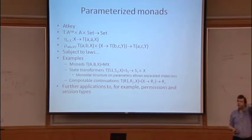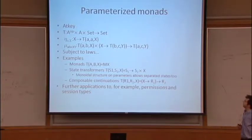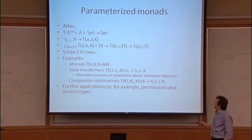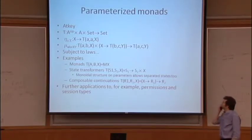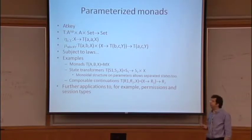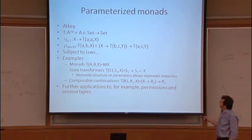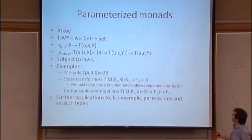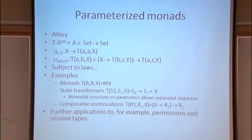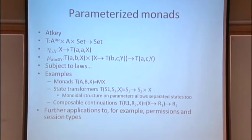Another nice generalization of monads is due to Bob Atkey: parameterized monads. It's a fairly natural-looking generalization that turns out to be very neat. Instead of just asking for T from set to set to be a monad, we feed into the definition of the monad both a covariant and a contravariant parameter. The generalization has an eta and a bind operation: for any x, you can go to a T of AA x for any A. You can see the pattern in the composition — we have a computation from A's to B's, a continuation from B's to C's, and the overall computation produces a y but takes you from A's to C's.